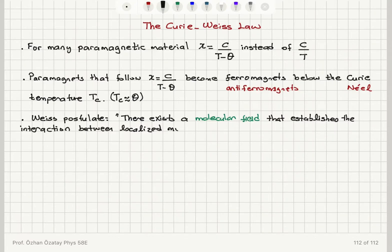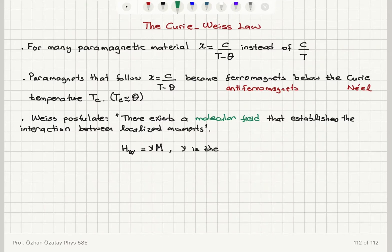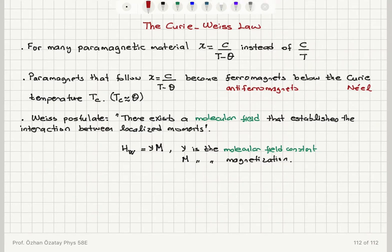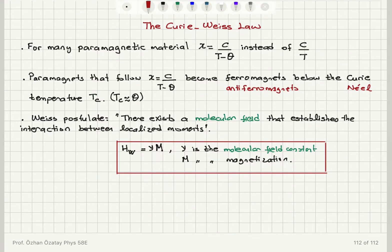There is a slight modification to Curie's law by considering a molecular field that represents the interaction between localized moments. This Weiss molecular field, Hw, is proportional to the magnetization M. So Hw equals gamma times M, where gamma is the molecular field constant and M is the magnetization. This Weiss molecular field accounts for the interaction between localized moments and is proportional to M.